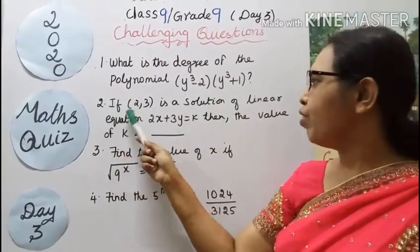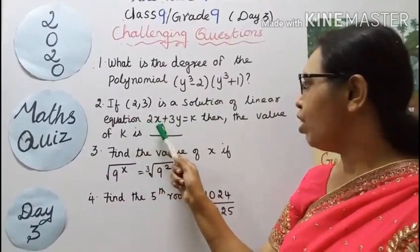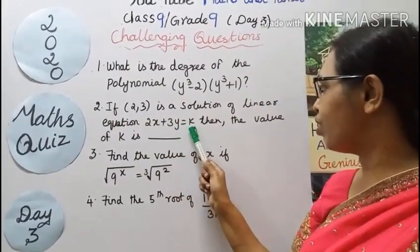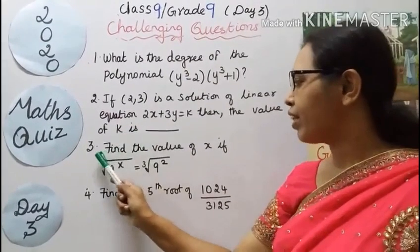Second question, if (2, 3) is a solution of linear equation 2x + 3y = k, then the value of k is?